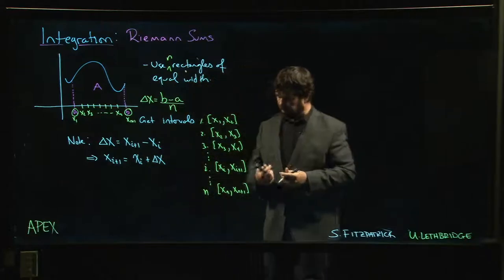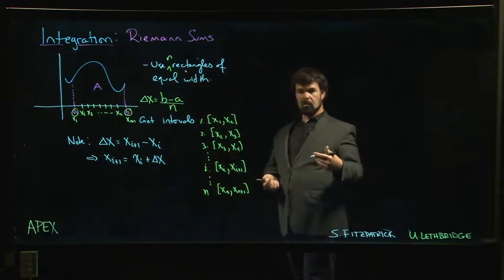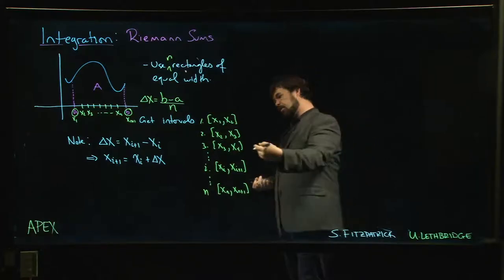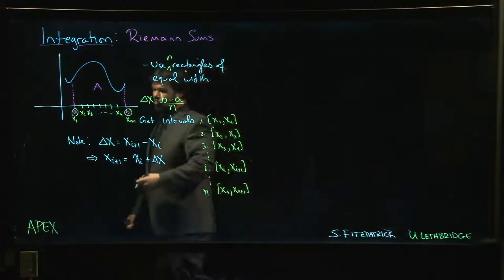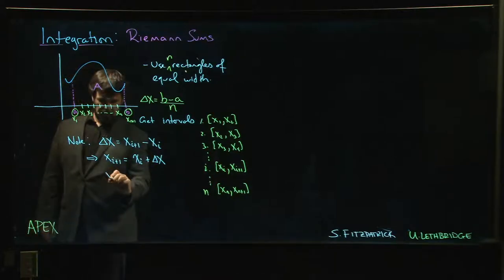This gives you this sort of nice recursive formula for how to generate the points. But sometimes you don't want to have to - maybe you just want to know what's x17 and you don't want to have to do x1 through x16 first. So you think about it and you say, okay, well x1 is just x1, x2 is x1 plus delta x.